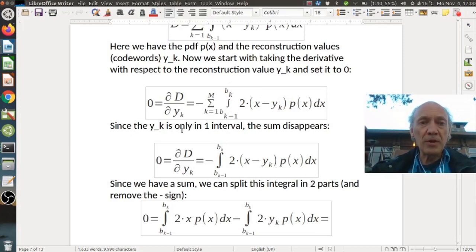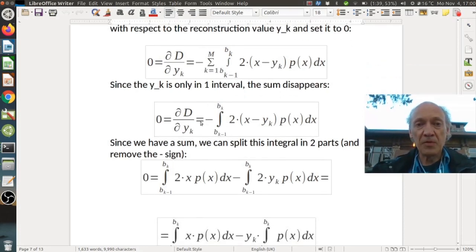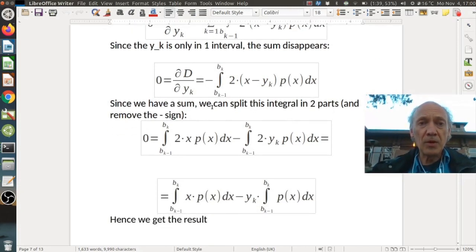We can take the derivative fairly easy but we still have this integral here. Since the y_k is only in one interval, the sum disappears. We just keep the element which contains the y_k. Since we have a sum, we can split this integral in two parts and remove the minus sign.